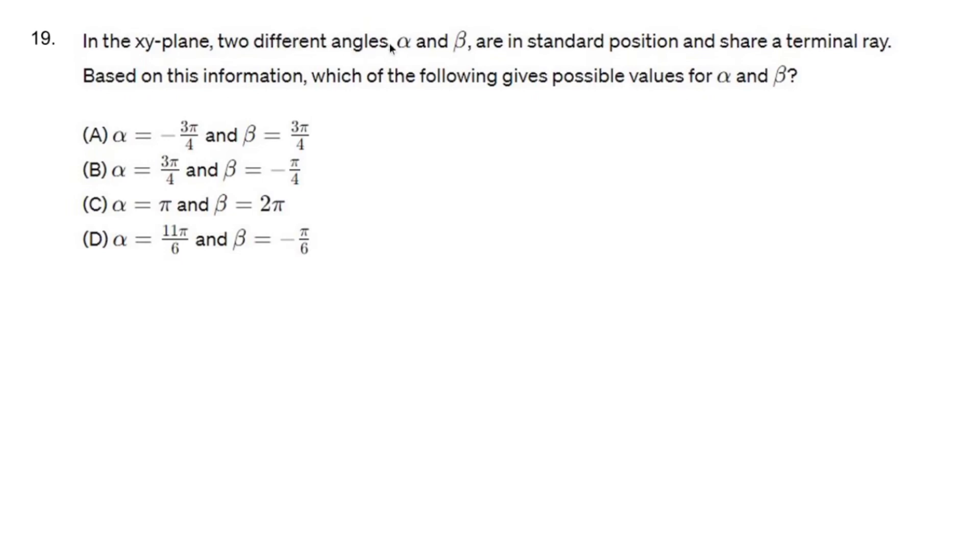In the xy-plane, two different angles α and β are in standard position and share a terminal ray. What does that mean? Well, if you were to graph something, here's your regular initial ray, and then your terminal ray is going to show up like this. Both of these angles will look like this, have the same exact picture.